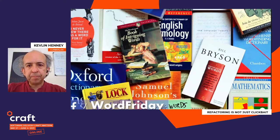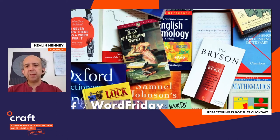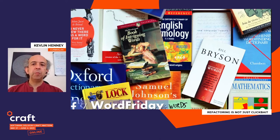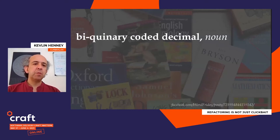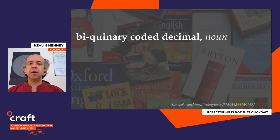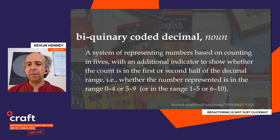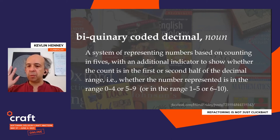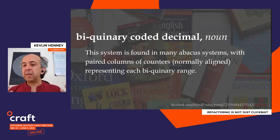I run a page on Facebook called 'Word Friday' — I just put language and word-related stuff up there, including definitions of unusual words or phrases. What I put up a few years ago was 'biquinary coded decimal.' Biquinary — bi meaning two, quinary meaning five. A system of representing numbers based on counting in fives. You can find this on many classic abacus systems — not the abacus systems we give to our kids, but those still found in markets in Asia, the Middle East, and Africa. A classic design: five beads plus two beads, one for the high register and one for the low register.